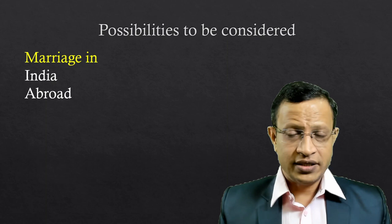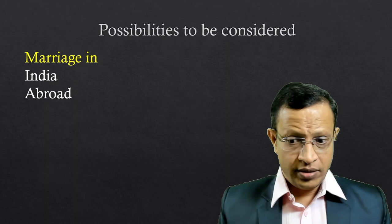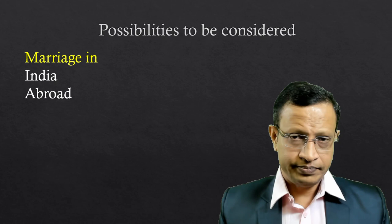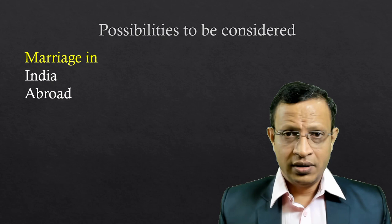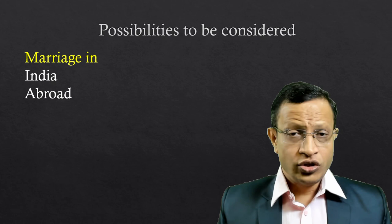If they get married abroad — either both are Indian, or one is Indian and the other is a foreign national or NRI — and the marriage occurs in, for example, the United Kingdom, whether UK laws or Indian laws will prevail needs to be understood. This is called jurisdiction. The next question is what if the marriage occurred in India but a divorce petition is filed in an Indian court, a foreign court, or in a third country where both have gone to work.